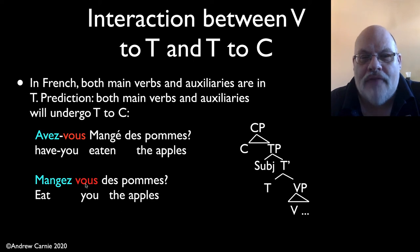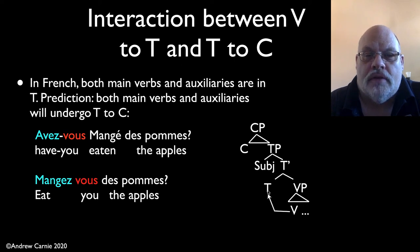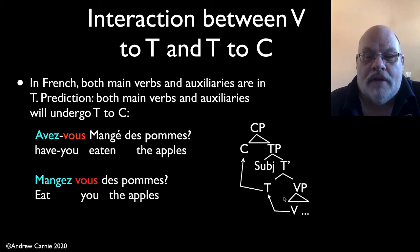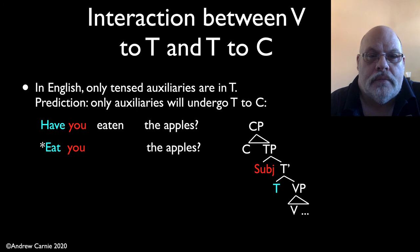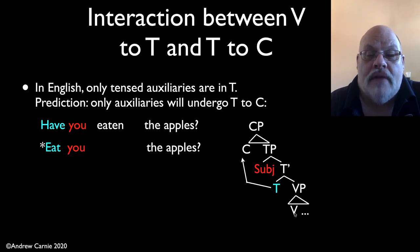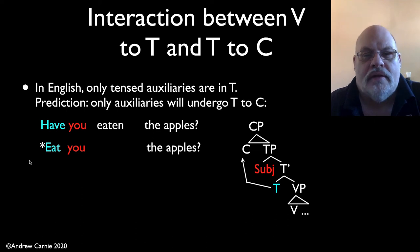Why should this be the case? It's actually a consequence of the fact that French, but not English, is a V to T raising language. We argued in a previous video that in French, verbs move into the tense position, but they don't do so in English. As a consequence, when you do T to C movement in French, you take that main verb along with it, giving you 'mangez-vous des pommes.' In English, by contrast, the verb has not raised into the T node, so you do not get main-verb subject-aux inversion. Auxiliaries are in T and undergo T to C movement, but because main verbs have not moved into T, they don't undergo subject-aux inversion. This ties the two claims — V to T and T to C movement — together.